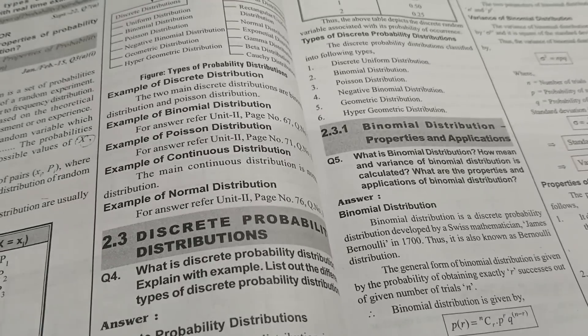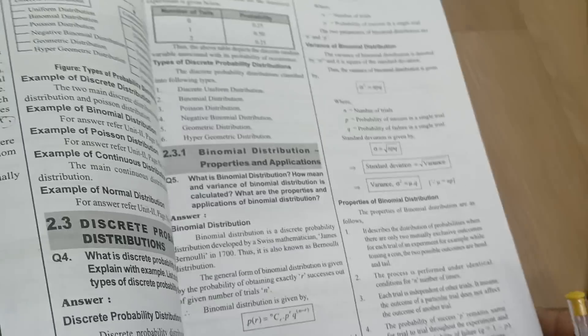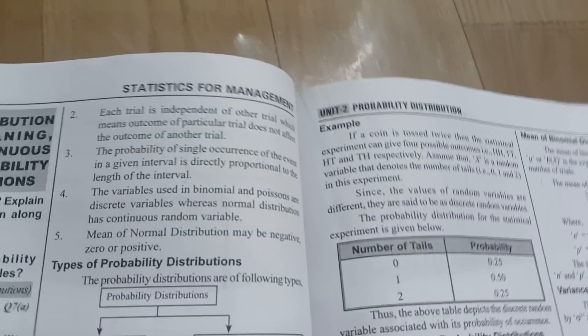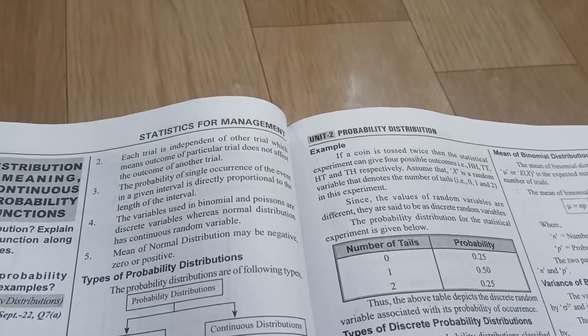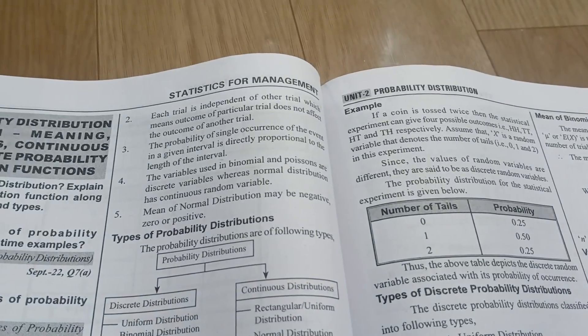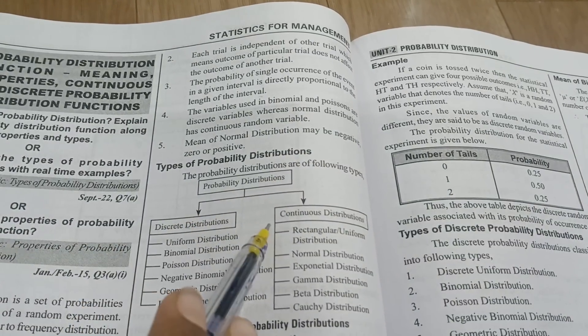Next, they are asking each trial is independent of the other trial, means each one is different with the another one. And normal distribution, whatever you are having, it will be always zero or positive or negative it may be.